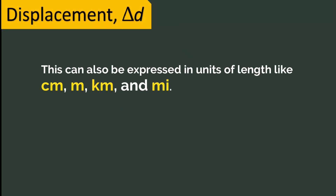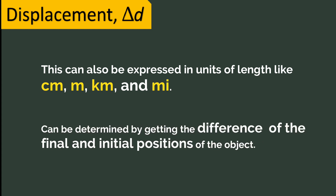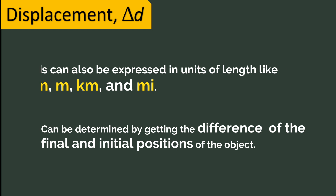Like distance, displacement can also be expressed in units of length: centimeter, meter, kilometer, and mile. Being defined as the change in position of an object, the displacement can be determined by getting the difference of the final and initial positions of the object from the frame of reference.